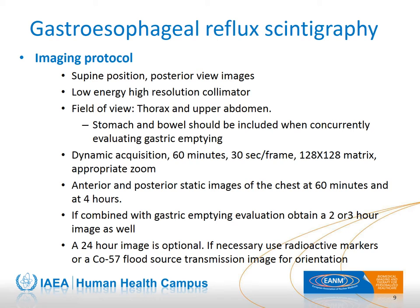Regarding the imaging protocol: the child is imaged in the supine position. The camera head, equipped with a low-energy high-resolution collimator, is positioned under the imaging bed with the thorax and upper abdomen in the field of view. Posterior view dynamic images are acquired for 60 minutes, 30 seconds per frame, on a 128×128 matrix with appropriate zoom. Anterior and posterior static images of the chest are obtained at 1 and 4 hours. If combined with gastric emptying evaluation, 2 and 3 hour images should be obtained as well. Radioactive markers or Cobalt-57 transmission source images can be used for orientation.